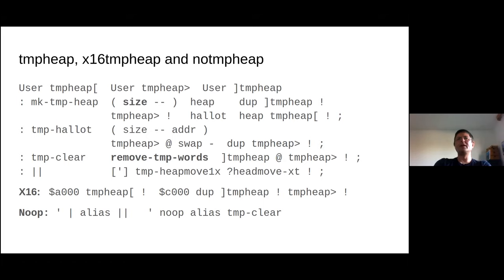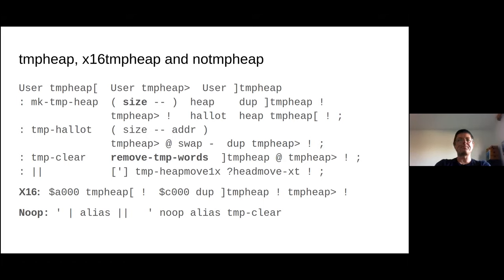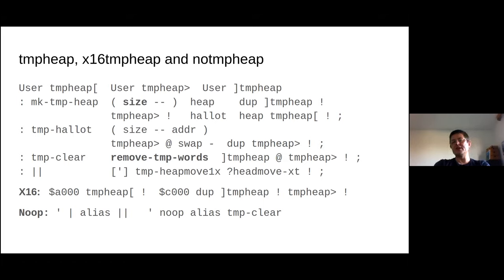The rest is relatively straightforward except for REMOVE-TEMP-WORDS — that's a little more code, but it just goes through all the current vocabularies, and for each header checks whether it's on the temp heap and if so hooks it out of the list. You use the temp heap with this double-pipe word, which does the same thing as the pipe word for the normal heap but calls the temp-heap-move-once word instead — quite the same, just using a different allocation mechanism.